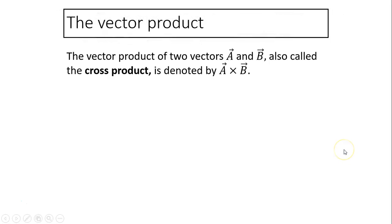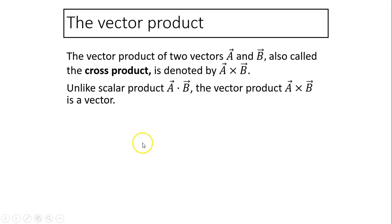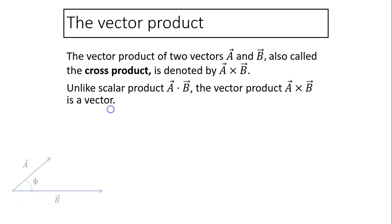The vector product of two vectors a and b is also called the cross product, and is denoted by a cross b. Cross product and vector product mean the same thing. Unlike the scalar product a dot b, the vector product is a vector quantity — that means it has both magnitude and a direction.